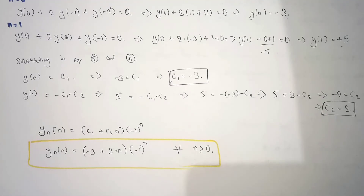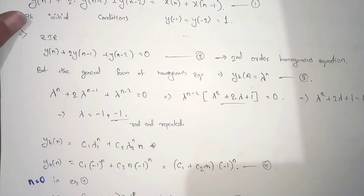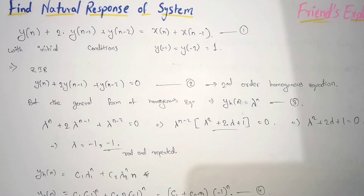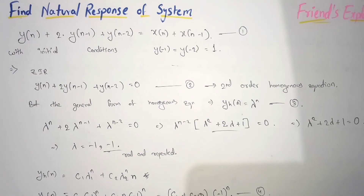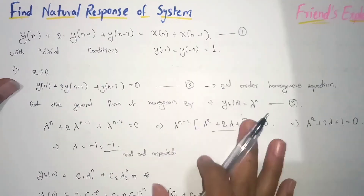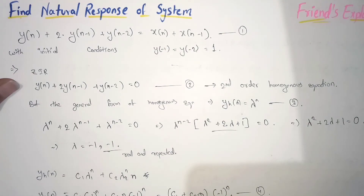So it's quite straightforward. We first got the homogeneous equation according to the nature of the roots, then substituted n = 0 and n = 1 into the homogeneous equation, and also into the original equation to find y(0) and y(1). After equating, we got C1 and C2, then substituted back so the homogeneous equation converts into the natural response. To understand the full procedure, please watch my first video on LCCDE — linear constant coefficient difference equations.